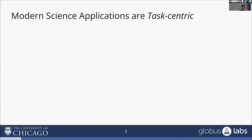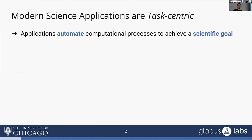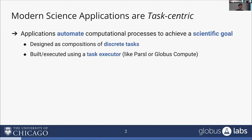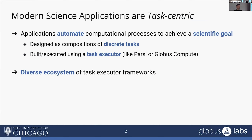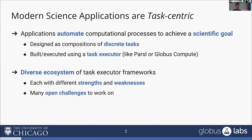Modern science applications are task-centric. What I mean by that is we build our applications to automate some computation process to achieve a scientific goal, and we do that by designing these applications as compositions of discrete tasks. And then we build and execute them using some task executor, like Parsl or Globus Compute. We have a very diverse ecosystem of different task execution frameworks, and they each have their different strengths and weaknesses, and there are a lot of open challenges that people in this room are really interested in working on.